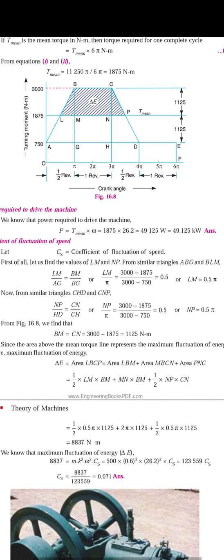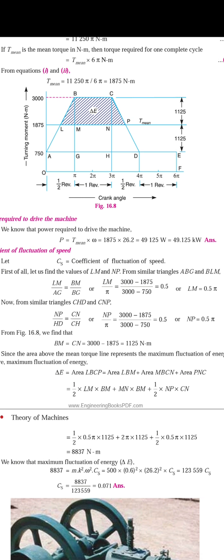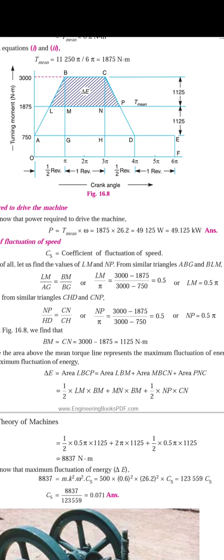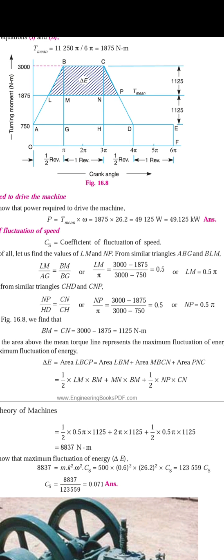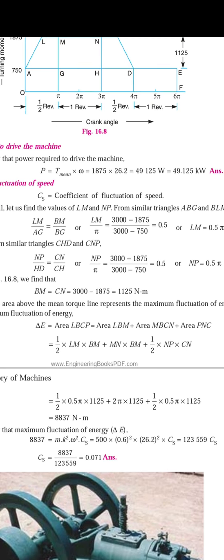Δe equals the area of triangle BLM plus the area of rectangle MBCN plus the area of triangle CNP. Area of triangle BLM = ½ × LM × BM. Area of rectangle BCMN = MN × BM (or CN). Area of triangle CNP = ½ × NP × NC.